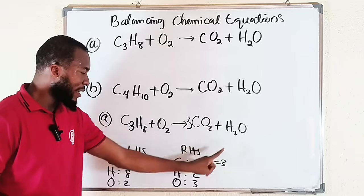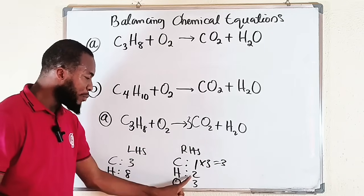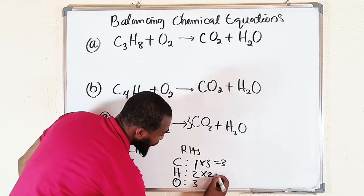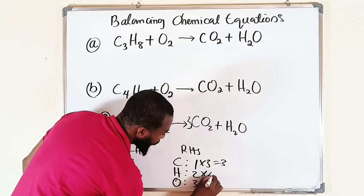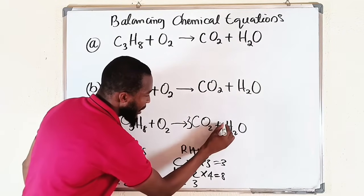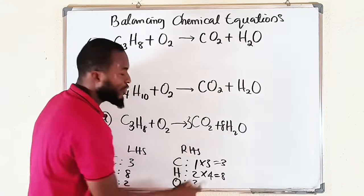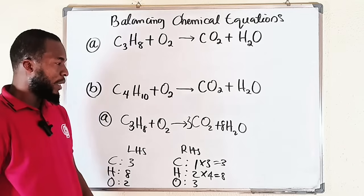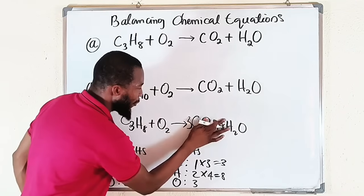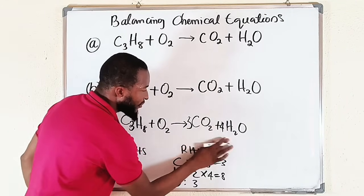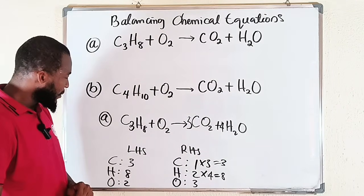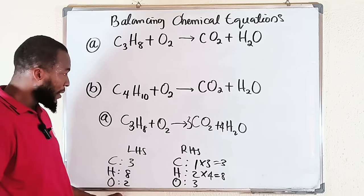Now let's move on to hydrogen. We have 8 hydrogen atoms on the left but only 2 in H₂O on the right. To balance it we multiply H₂O by 4, because 4 times 2 gives us 8. So we attach a coefficient of 4 to H₂O.